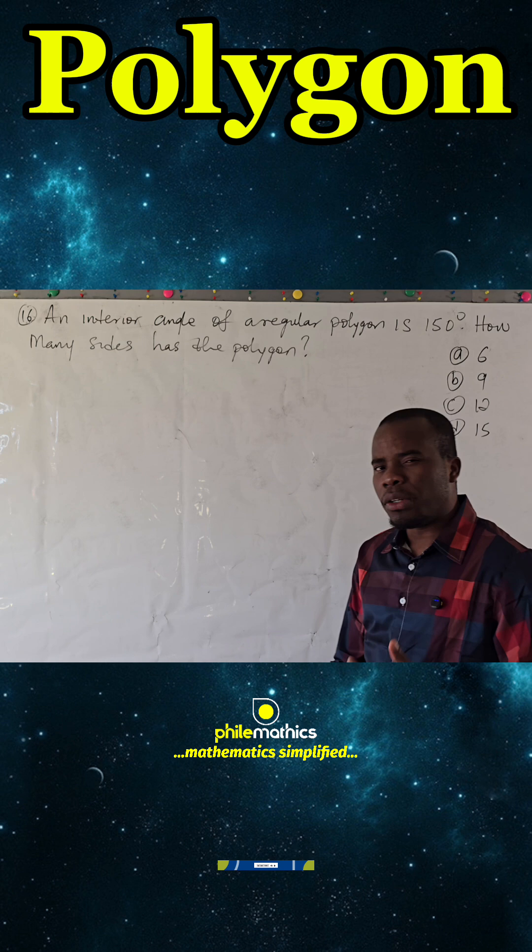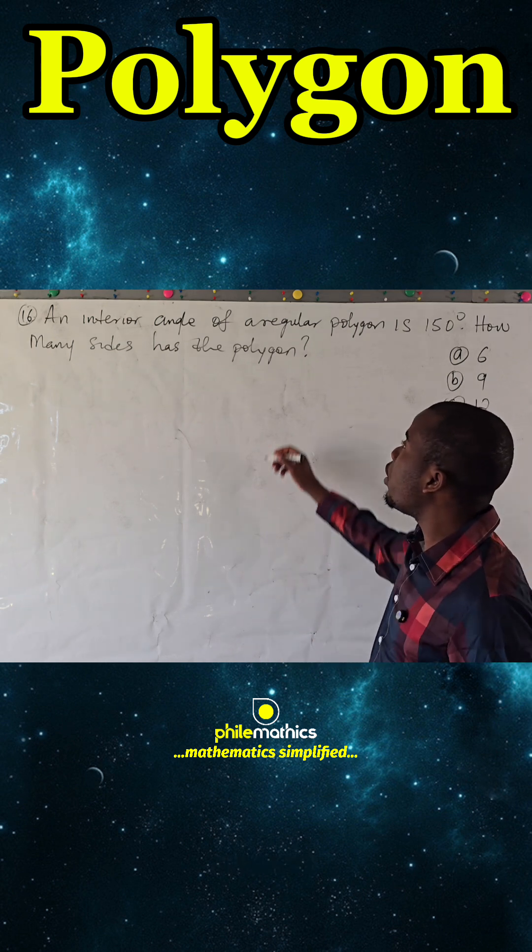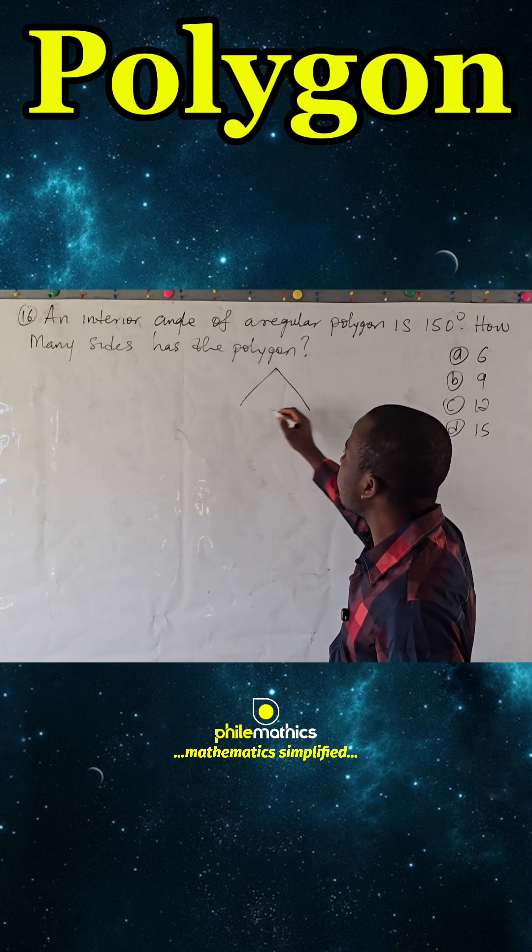We want to recall the relationship in a regular polygon. If this is a regular polygon...